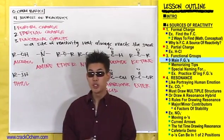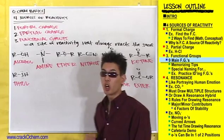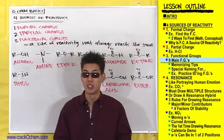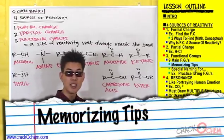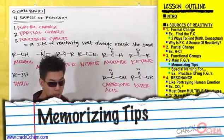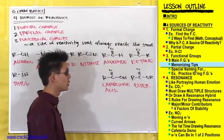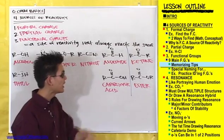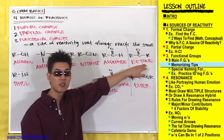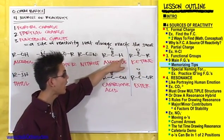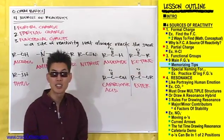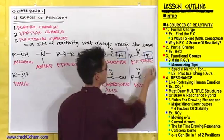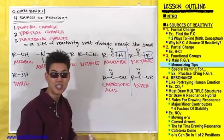What I want you to do tonight is go home and flashcard all nine of these functional groups so you can recognize them on sight. What can make this easier is that these four are very similar to each other. An aldehyde and a ketone are very similar — an aldehyde has a hydrogen and a ketone has an R there, that's the only difference.